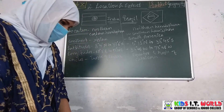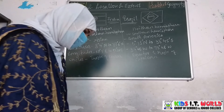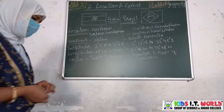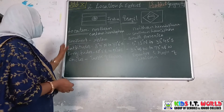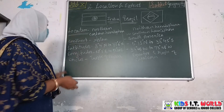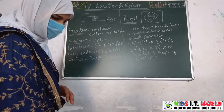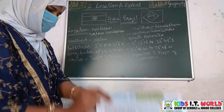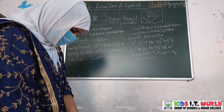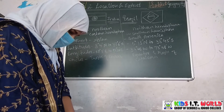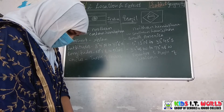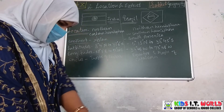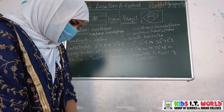First, let's look at where India is located. India is located in the northern and eastern hemisphere. You can observe the location of India on the world outline map, viewed on page number 12.